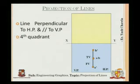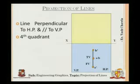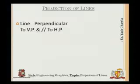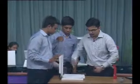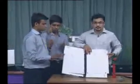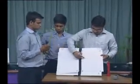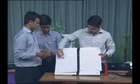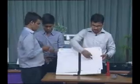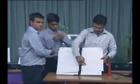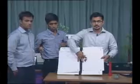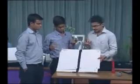For the fourth quadrant, both VP and HP lie below XY. Moving on to the next condition: the line is now perpendicular to VP and parallel to HP. Again we will have a demonstration. We will draw a line to show the difference. The first case was discussed here; we will discuss the second case and finally the third case.